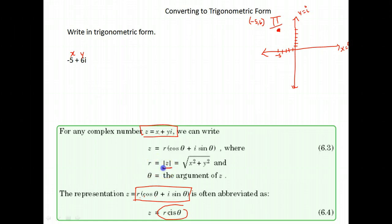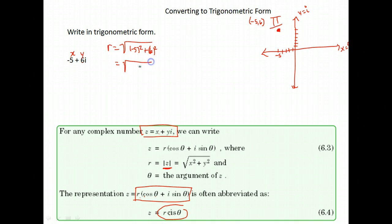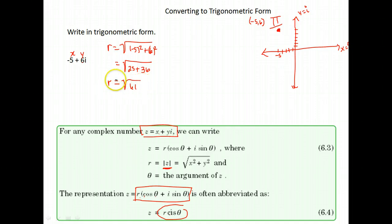Now r is the absolute value of your complex number. To find it, you take the square root of each portion squared — the square root of negative 5 squared plus 6 squared, so x squared and y squared. Negative 5 squared is 25, 6 squared is 36. 25 plus 36 is 61, so r is the square root of 61. I'll leave it in that form.